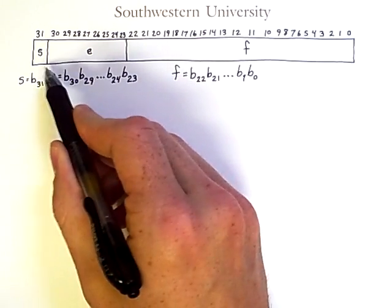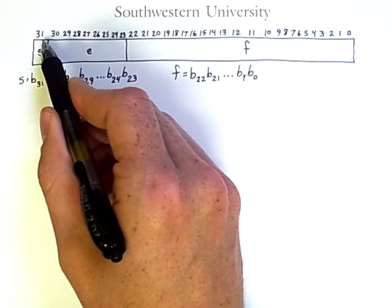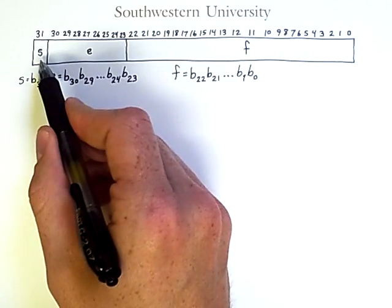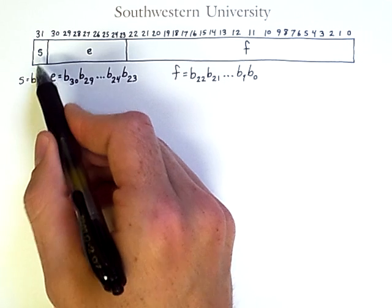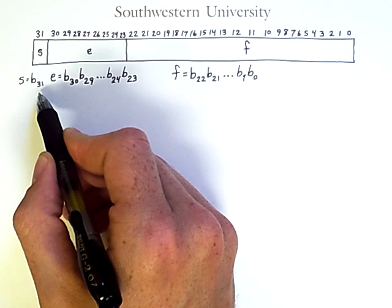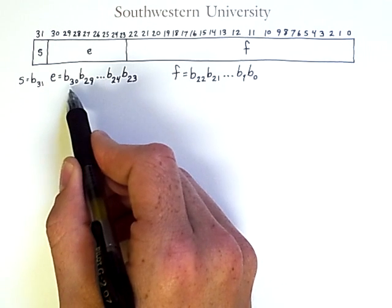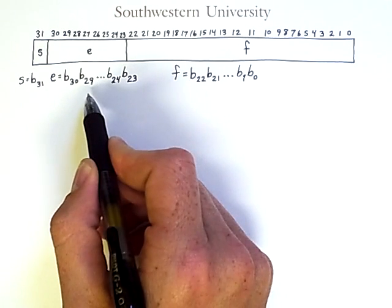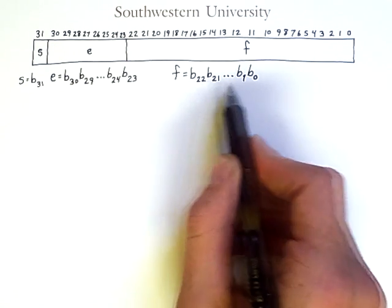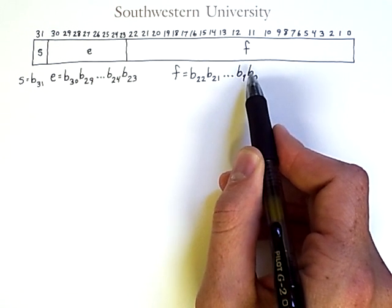Here we see these boxes representing the 32 bits that can make up a floating-point number in this format, numbered counting down. S refers to the bit at position 31, which is the sign bit, where 1 is for negative and 0 is for positive. E represents the bits from 30 down to 23. This is the biased exponent. And F represents the bits from 22 down to 0. F is a fractional component that represents the significand.